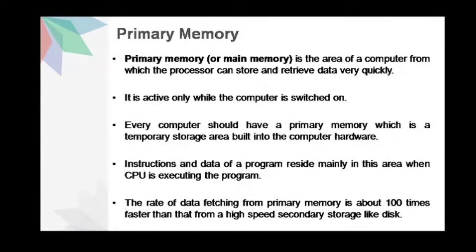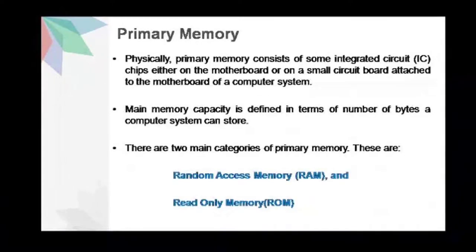The rate of data fetching from primary memory is about 100 times faster than that from a high-speed secondary storage. Primary memory consists of some integrated circuit chips either on the motherboard or on a small circuit board attached to the motherboard of a computer system. The primary memory is made of several small storage areas called locations or cells. Each of these locations can store a fixed number of bits called the word length of the memory.